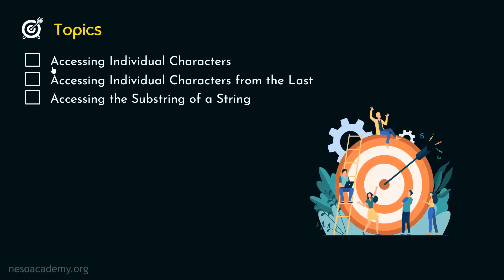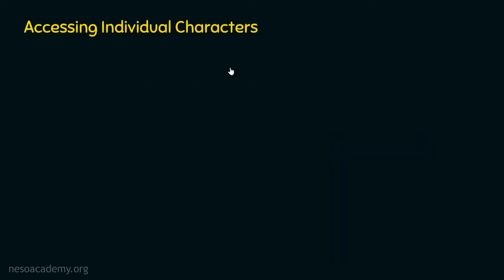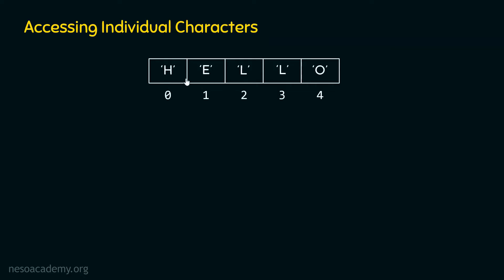Let's start with the first topic: accessing individual characters in a string. In Python, we are allowed to access individual characters in a string. For example, we have the string 'hello', which has a total of five characters. Each character receives a number starting from zero up to the length of the string minus one.